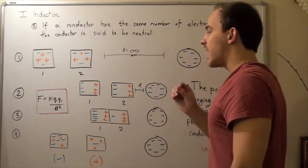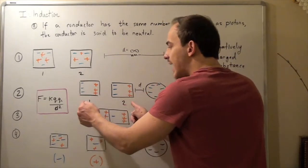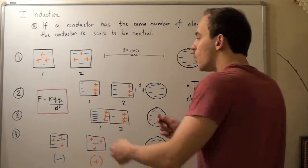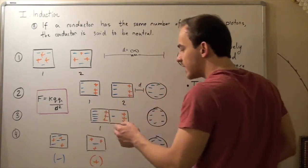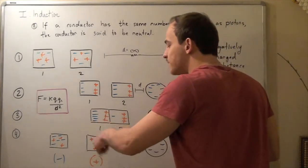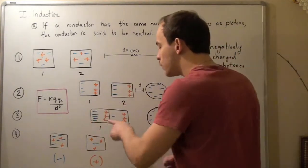Now suppose I really quickly take these two and make them touch and then separate them. What will happen? Well, as soon as I touch them, these electrons will be able to physically move to this side, and in fact they will move to this side.